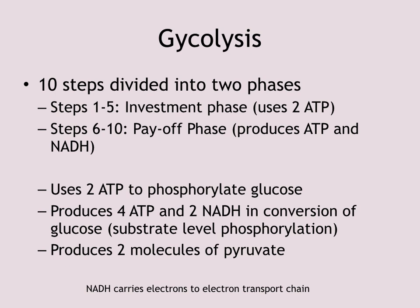Primary metabolism is the metabolism of glucose, and glucose is initially broken down and accepted into the cell through glycolysis. Glycolysis is a 10-step metabolic pathway. Steps one through five — the investment phase — require us to put in two ATP. But at the end of glucose metabolism, we end up with approximately 32 to 36 ATP, giving us about 18 times the return on our initial investment.